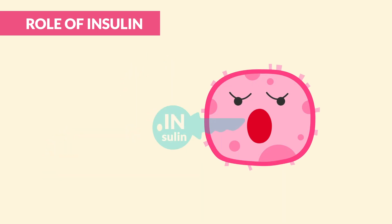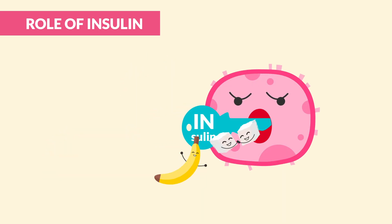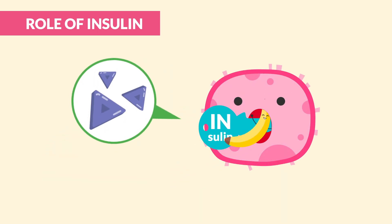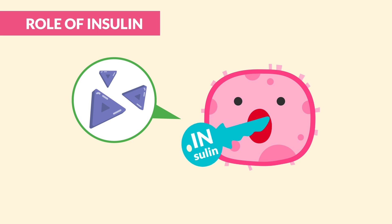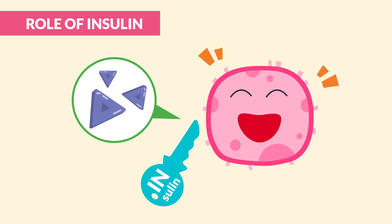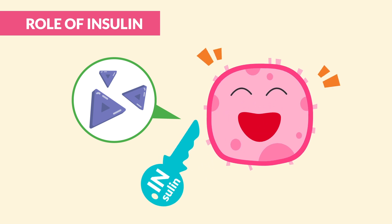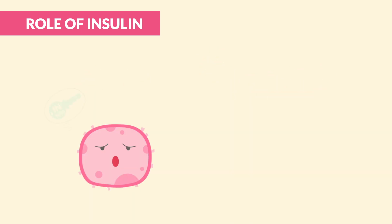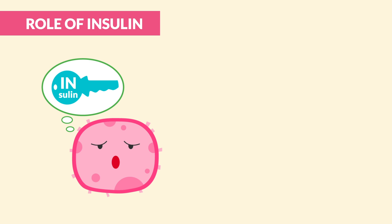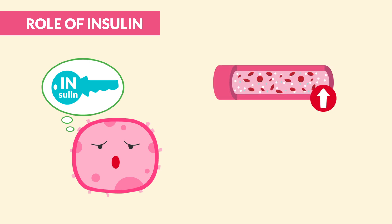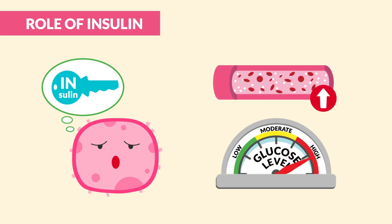Insulin acts like a key to put sugar and potassium into the cell, making hungry cells really happy. Without enough insulin, sugar and potassium can't get into the cell, so glucose builds up in the blood, leading to high blood sugar levels.